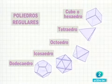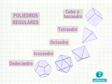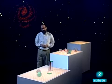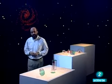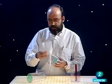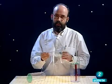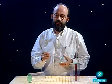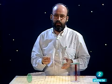Todos ellos tienen sus caras iguales y en cada vértice confluye el mismo número de caras. Son los poliedros regulares. Pero no todos los poliedros convexos son regulares. Existen otros, como estos, que o bien no tienen todas sus caras iguales, o bien en cada vértice no confluye el mismo número de caras. Son los poliedros irregulares.